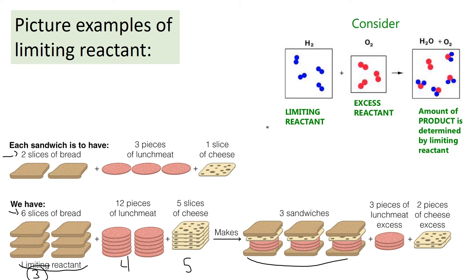Let's look at this in terms of molecules. If we have four molecules of hydrogen and three molecules of oxygen making water — four hydrogens each make a water, so hydrogen makes four waters; each oxygen makes a water and we have six, so oxygen would make six. We can't make six because we don't have enough hydrogen. The limiting reactant is hydrogen and we can make four waters, with leftover oxygen.